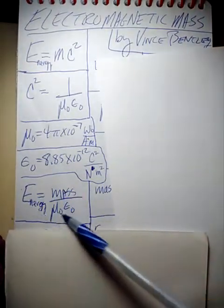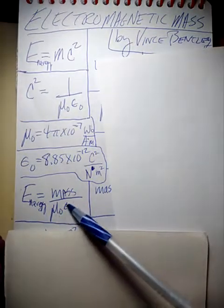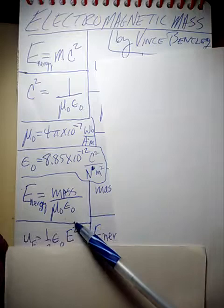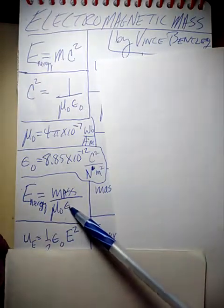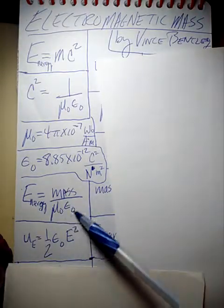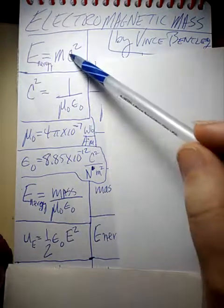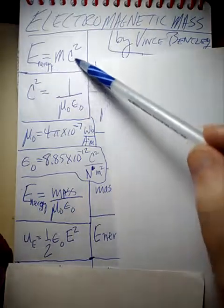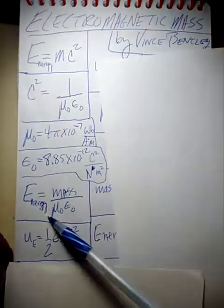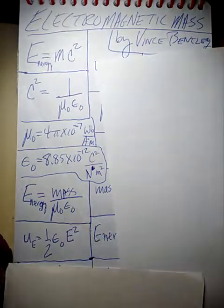But this equation allows us to see the actual magnetic and electric components of how mass converts into energy. And it gives us a little bit more of the story than this does right here. This is a more compact form, and this gives us a little bit more of the story. It's less compact, but it gives us more of the story.